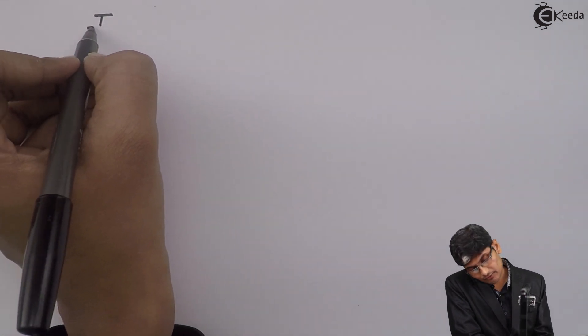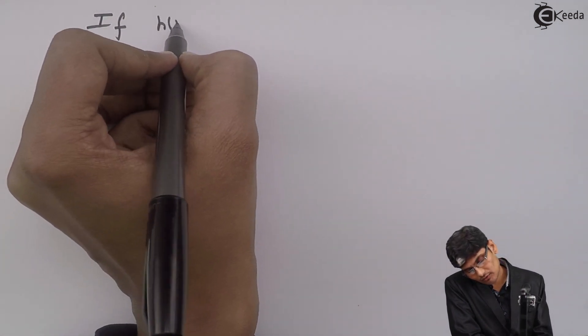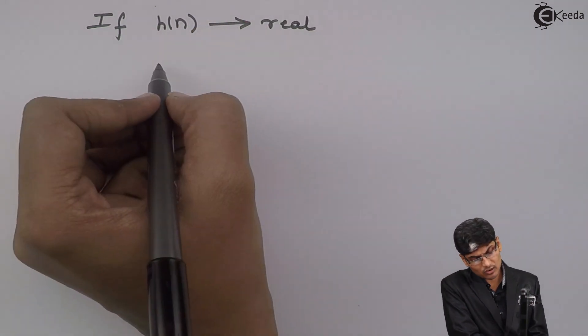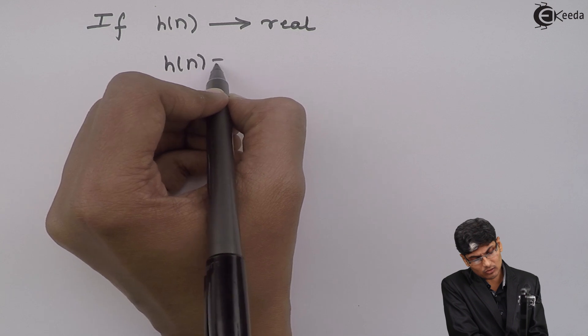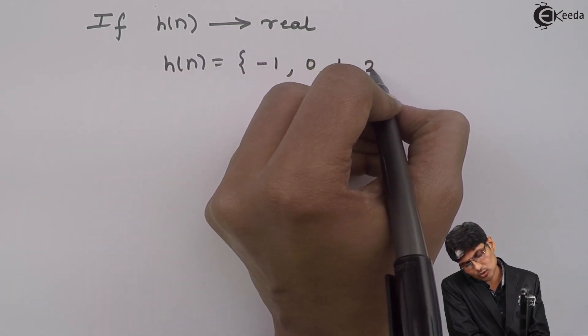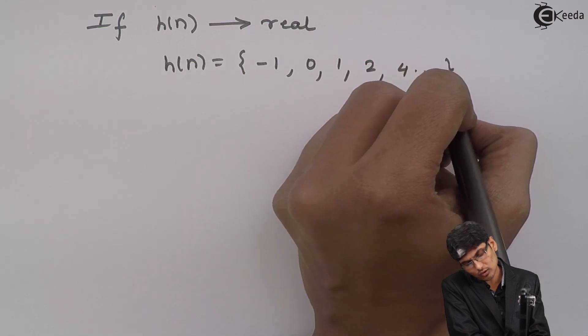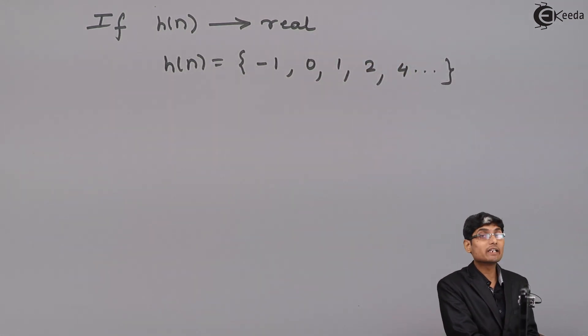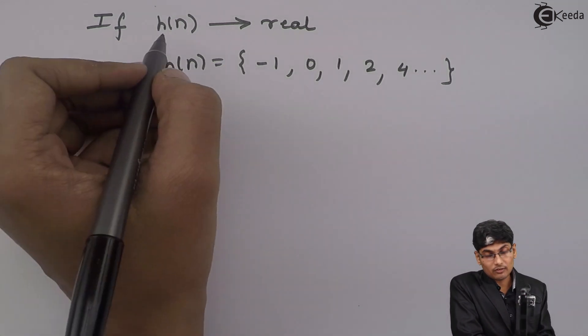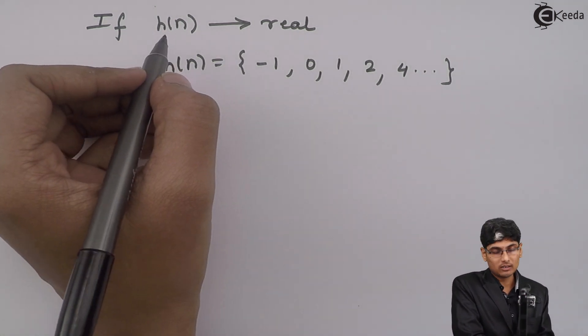There are certain characteristics of a frequency response. If h(n) is real — that means h(n) might have some values like −1, 0, 1, 2, 4 and so on — that means the given impulse response is real. H(n) is nothing but the impulse response.